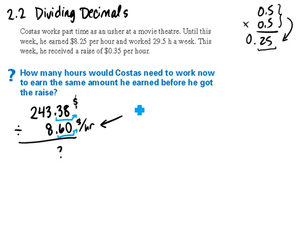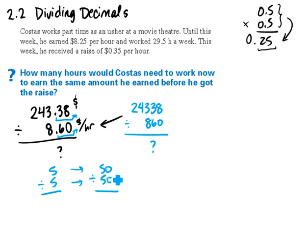So we rewrite this question as, instead of 243.38 divided by 8.60, it's now 24,338 divided by 860. We notice it's the same question, as for example 5 divided by 5 and 50 divided by 50. What we did to one side we did to the other side, and the answer will be the same. So there is nothing to do with the answer. We don't have to change the answer at all once we balance the top out and the bottom out.